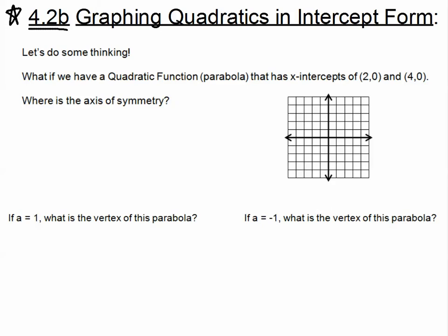But before we get started, and before I give you what intercept form is, let's do some thinking. What if we had a quadratic function — a parabola — that has x-intercepts of (2, 0) and (4, 0)? Where is the axis of symmetry?